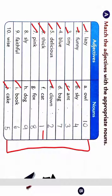Now question number 7 is pink. What is pink? Pink is our bag here. Eight is sly. Sly means cunning. What is sly? Sly is fox. Then nine, faithful. Who is faithful? Dog. This could be anything, but we need to see the options.